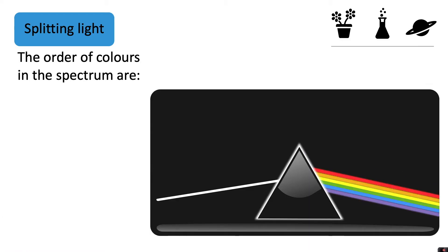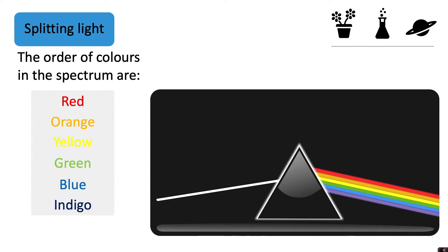The order of the colours in the spectrum are red, orange, yellow, green, blue, indigo and violet. To remember this you can remember Roy G. Biv, and that will give you the first letter of each of the colours.